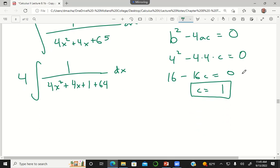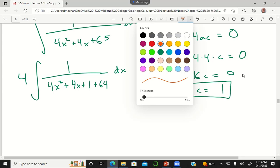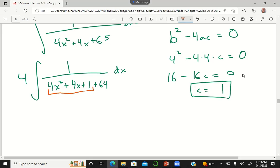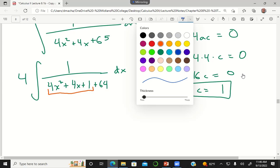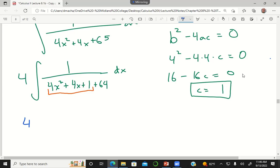We could do plus 1 minus 1, but we already have the perfect square that I want. Now how would I factor my perfect square, just factoring the part in orange?